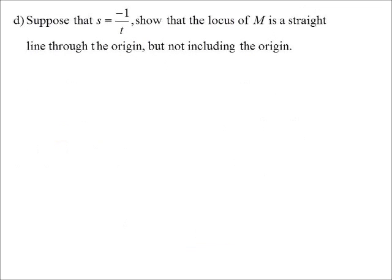Suppose that S is equal to minus 1 on T. Show that the locus of M, so here comes that end point, the locus question, is a straight line through the origin, but not including the origin. So there is a restriction on it. We just found X was 4ST on S plus T. Y is 4 over S plus T. We need to eliminate the parameters, get a relationship between X and Y. Anyway, they've told us S is equal to minus 1 on T. So there's a connection we can use. So if S is equal to minus 1 on T, another way of saying that is, ST is negative 1.